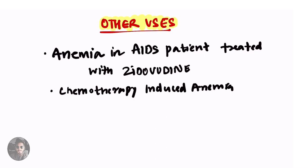Other than chronic kidney disease EPO can also be used in anemia in AIDS patients treated with zidovudine and in cancer patients who suffer chemotherapy induced anemia.